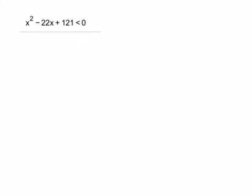So next thing to do is, now that we have zero on one side, the next thing to do is to factor the other side. So x squared minus 22x plus 121, that factors to x minus 11 quantity squared.